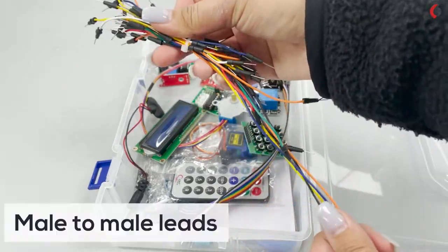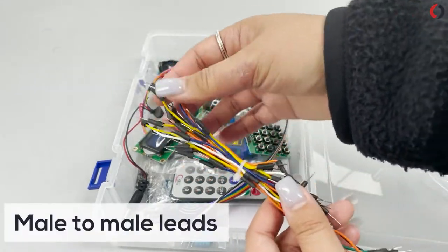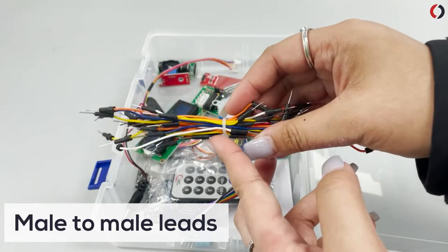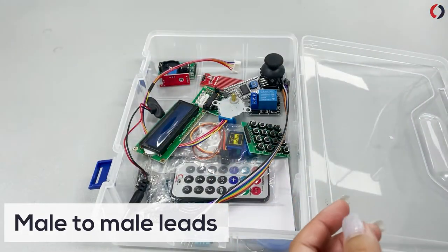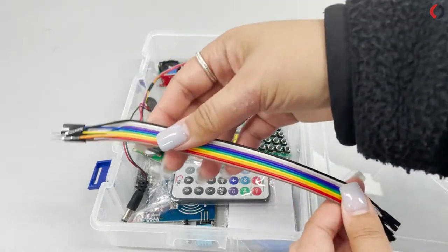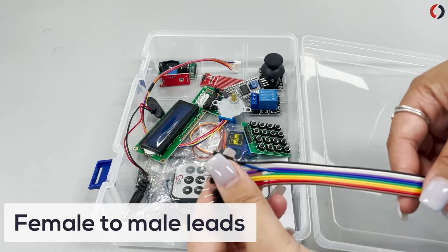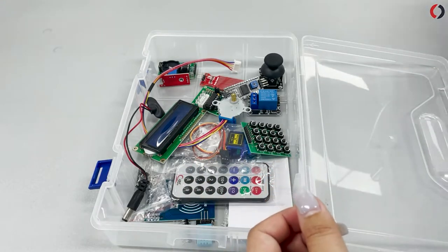You have your male to male leads in different lengths. So you have your short ones, your long ones. It comes with a nice cable tie. And then you have more cables, but these are female to male. So you can see that.